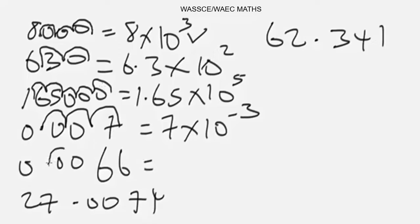So for this one, we are going to move how many times? One, two, three. So this one would be 6.6 times 10 to the power negative 3.